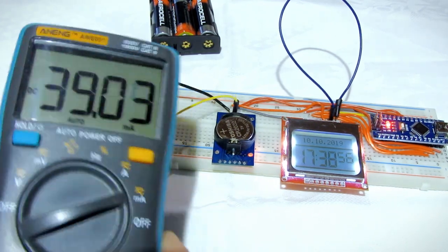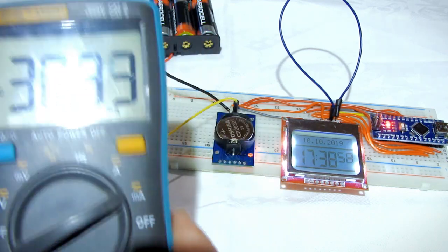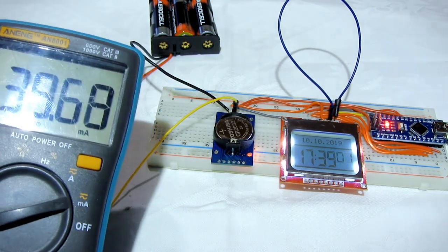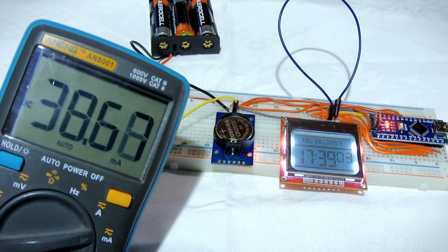OK, first result is this. My circuit draws 39 mA of current.